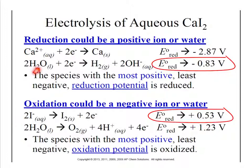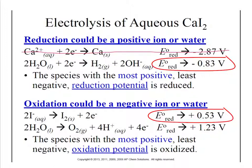To figure out which one it's going to be, we distinguish who has the more positive number — we go to the SERP table and compare calcium and water. In this case, water has the more positive number, which means it's higher on the list. Therefore, water will be the one that is reduced. So the calcium reduction reaction will not occur, leaving us with water as our reduction half-reaction.